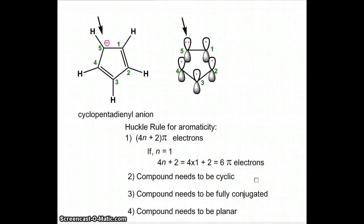The third rule is that the compound needs to be fully conjugated. As you can see, these p orbitals are perpendicular to the plane of the ring. Therefore, they are parallel to each other and can overlap laterally. Therefore, the six electrons are fully conjugated because of the lateral overlap of p orbitals.